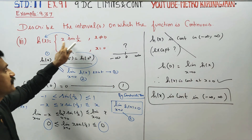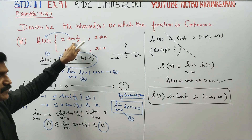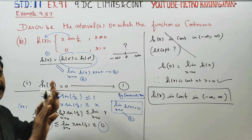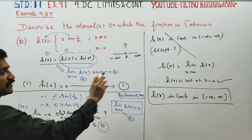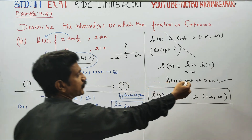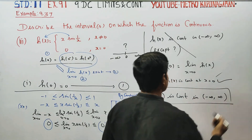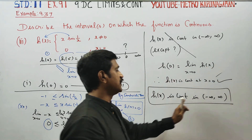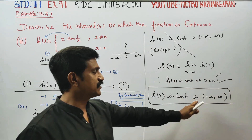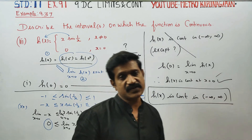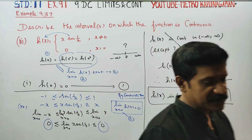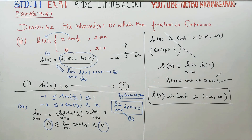In the interval, all is continuous, because this is an algebraic function and this is a trigonometric function. We checked x=0 and found h(x) is continuous there too. Therefore h(x) is continuous on (minus infinity, plus infinity). Thank you.